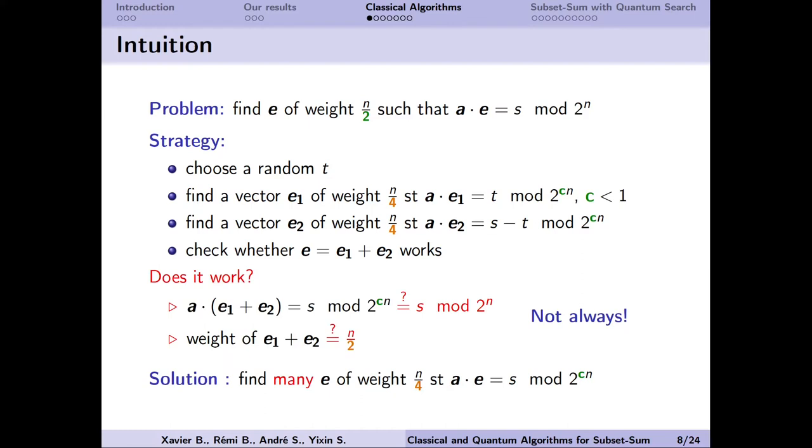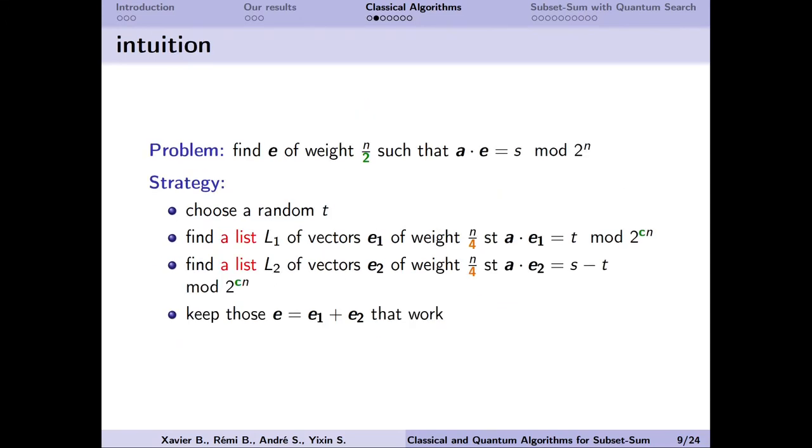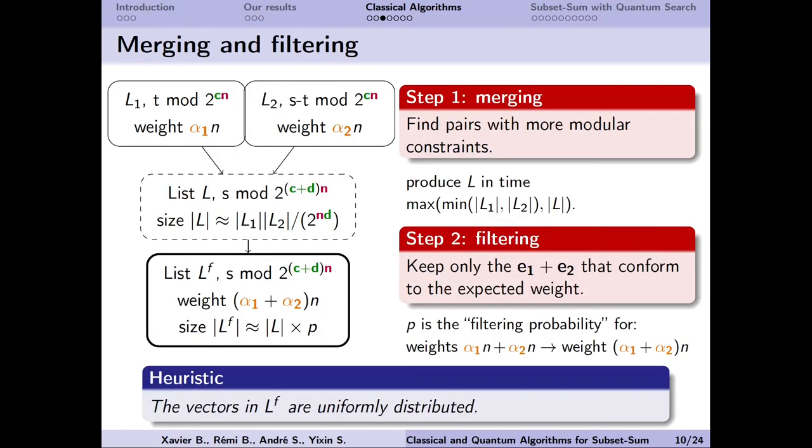For this to work, two non-trivial conditions must hold. We know that the sum is a solution modulo 2 to the power cn, but not necessarily modulo 2 to the power n. Furthermore, the weight of the sum is not always n over 2. This is because e1 and e2 may have some ones on the same position. So when we add them together, it becomes a 2. The idea is that if we have many different solutions e1 and e2, we can hope to find one solution for the original subset sum problem. Therefore, our new strategy is not to just find one pair of solutions e1 and e2, but two lists of solutions to the easier subset sum problems. We call this process of putting together solutions, merging and filtering.